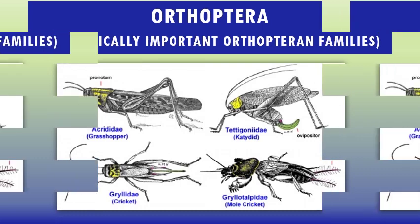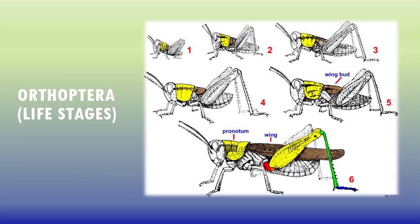Orthoptera are hemimetabolous. The life cycle consists of three phases: egg, multiple instars, and adult. Simple metamorphosis is the common name for this life cycle. The immatures tend to look like miniature versions of the adult. Insect orders with this life cycle are grouped under the term Exopterygota because of visible wing buds on the immatures. Mature and immature Orthoptera may use the same food source.